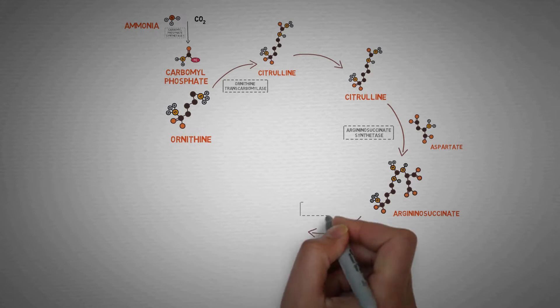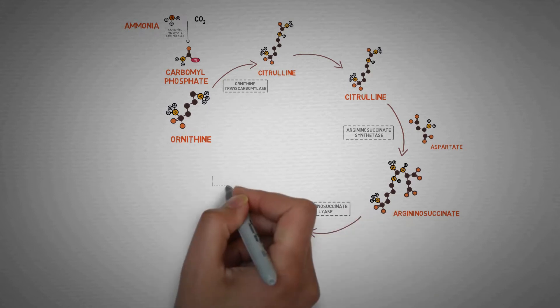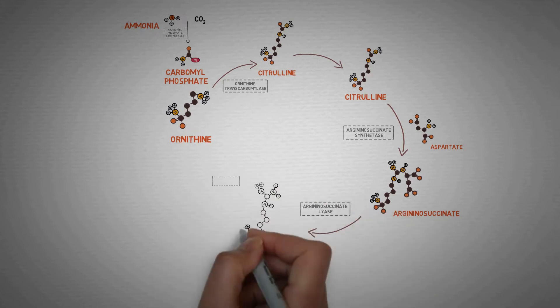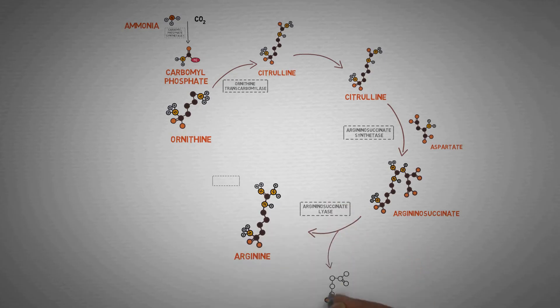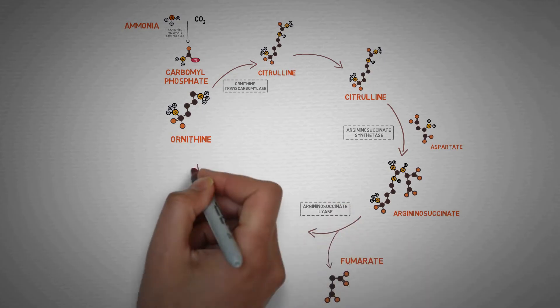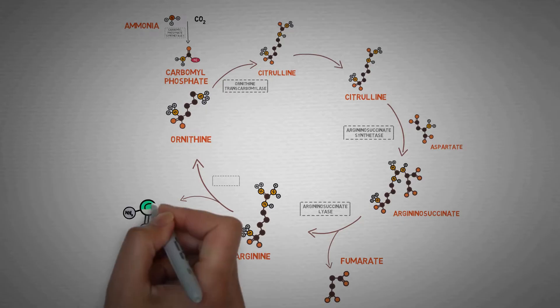So this is the urea cycle. This is a biochemical cycle that operates in both mitochondria as well as the cytoplasm of the cell and performs the main job of converting toxic ammonia to urea.